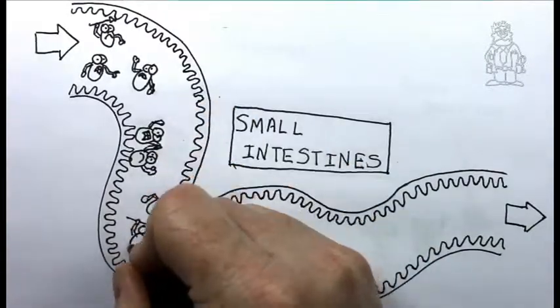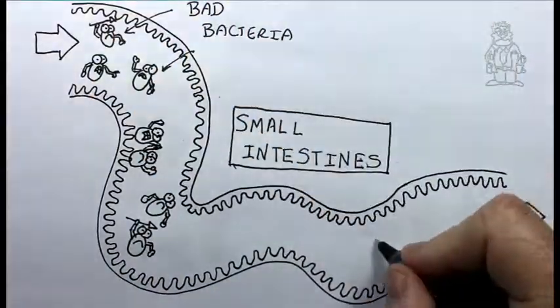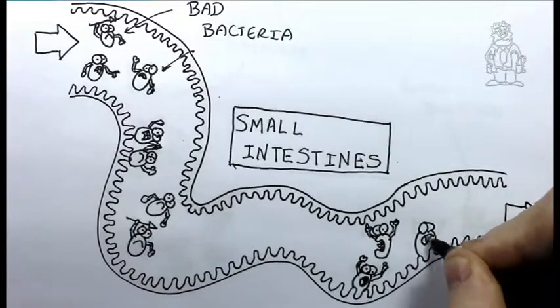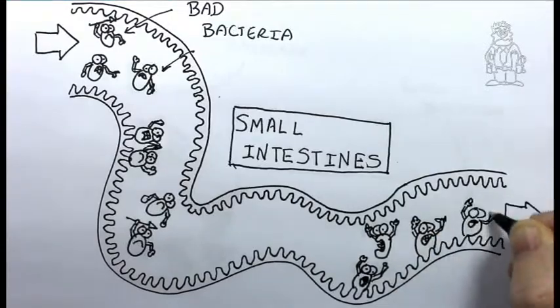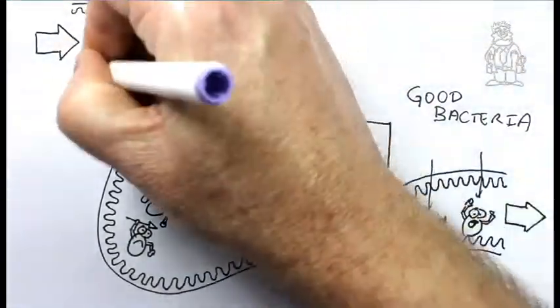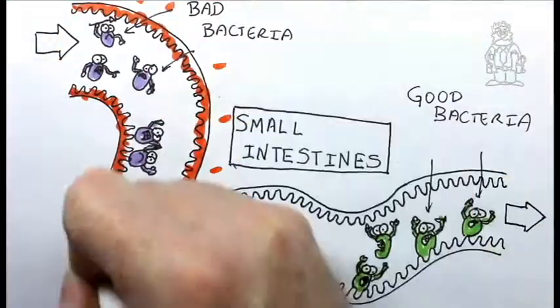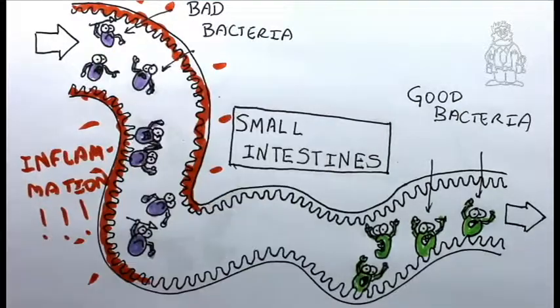Occasionally when we get sick, bad bacteria overwhelm the good bacteria creating problems like diarrhea. Also, when we take antibiotics for an ear infection we actually kill off a lot of the good bacteria in the colon, also creating the potential for problems.